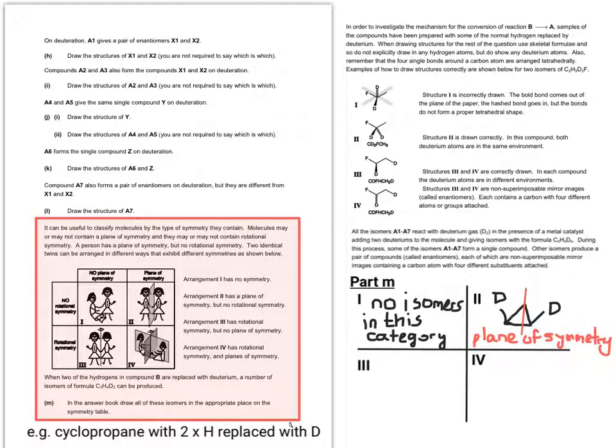So if we now go down to part three, you've got D pointing in opposite directions, so the same isomer, but the D is pointing in opposite directions on each side. And for part four, you've got the D coming off, or two Ds coming off the one carbon atom. So they're all based on cyclopropane, but in part four, you have a rotational plane, and you don't have, sorry, you do have a plane of symmetry as well.